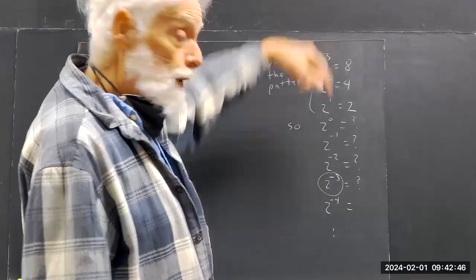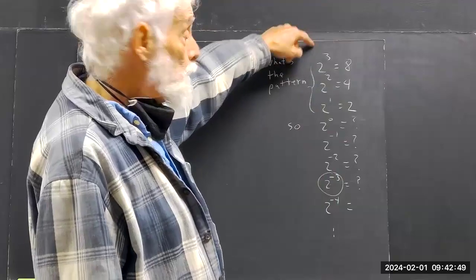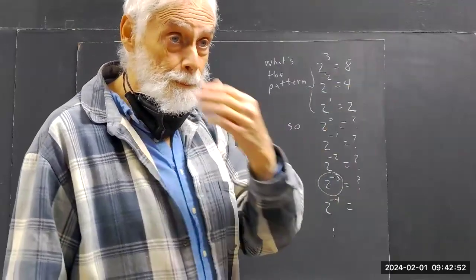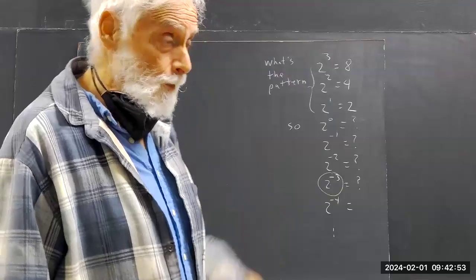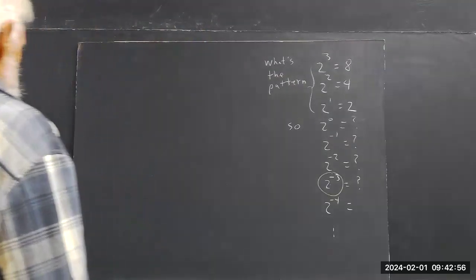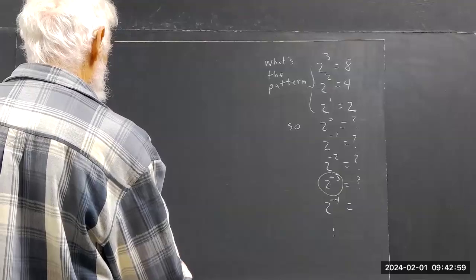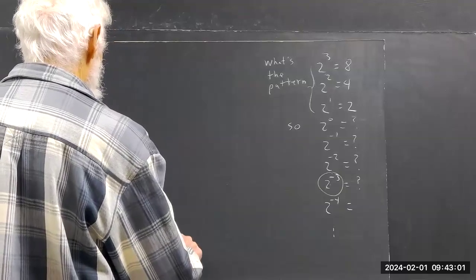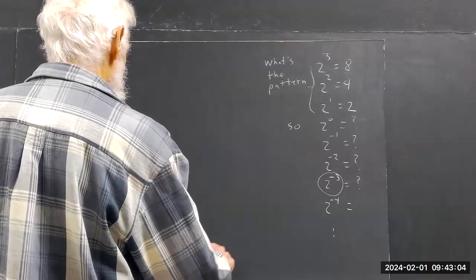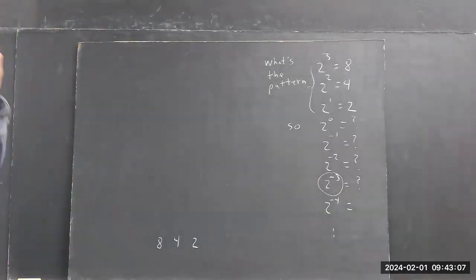Of course we could go up this way too — next would be two to the fourth, two to the fifth, two to the sixth. Now let's just look at these numbers. I'm going to write them down here: eight, four, two.